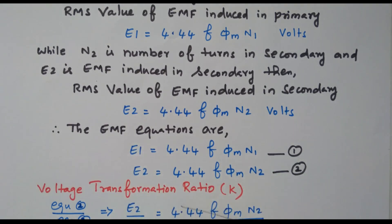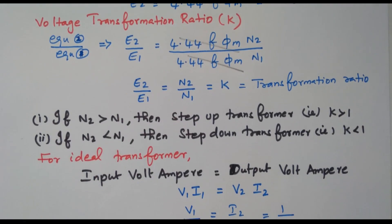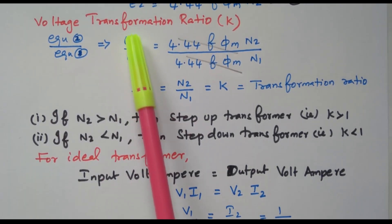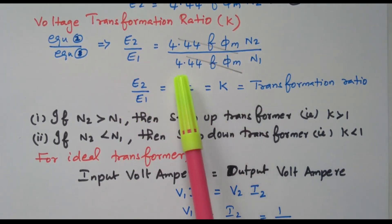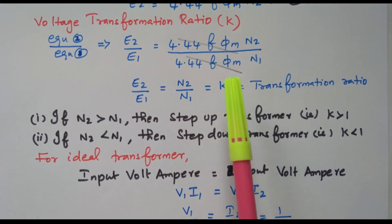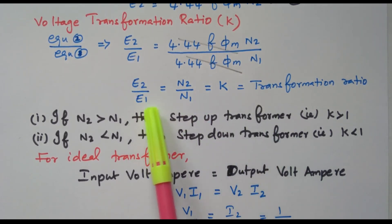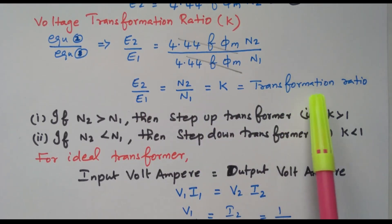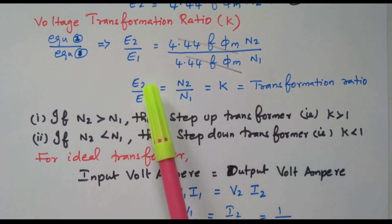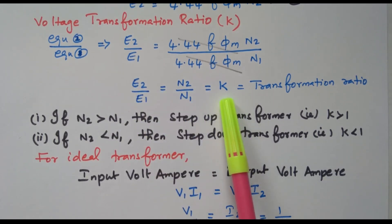So the EMF induced in primary and secondary are: Equation 1: E1 = 4.44FφMN1, and Equation 2: E2 = 4.44FφMN2. From these we can calculate the voltage transformation ratio. Dividing equation 2 by equation 1, 4.44FφMN2 divided by 4.44FφMN1 — the common terms cancel, leaving E2/E1 = N2/N1, which equals K, the transformation ratio. Voltage and turns ratios are proportional, termed K.